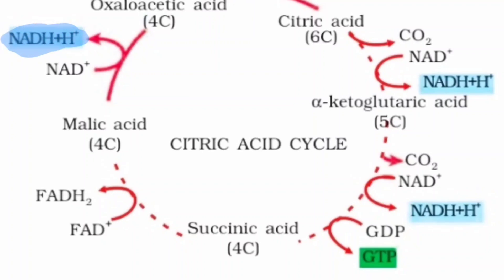At the end of the day, we call this a cycle because whenever we start a reaction from a single molecule, we will again reach the same molecule and start all over again. This is the reason we call it the Krebs cycle, the citric acid cycle, or the tricarboxylic acid cycle.